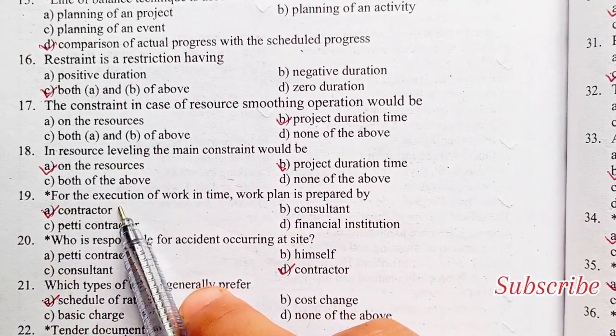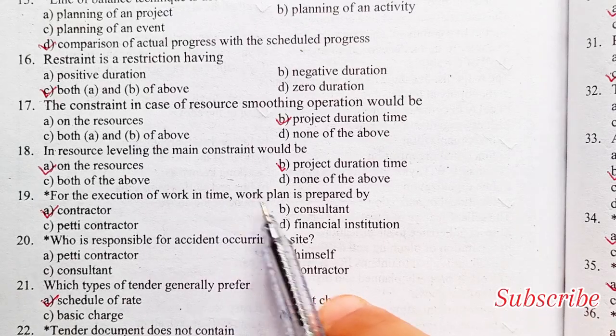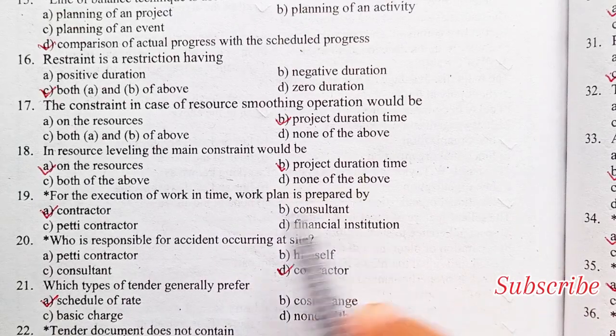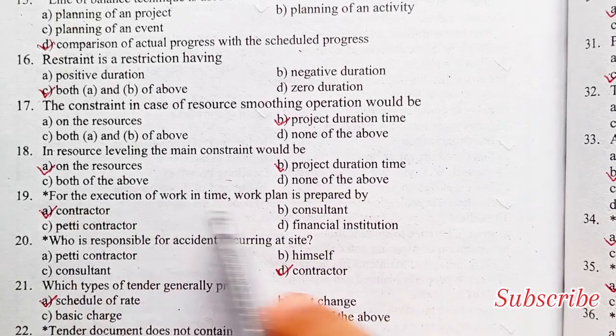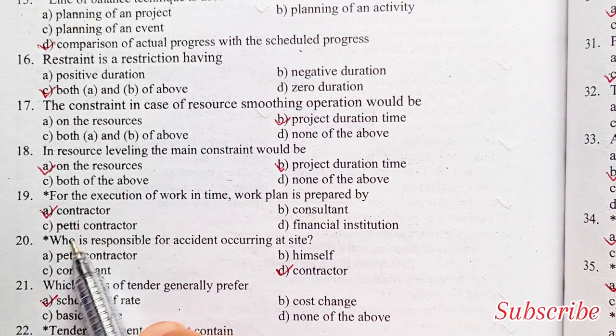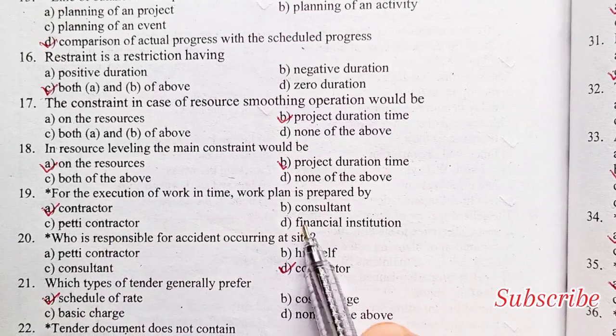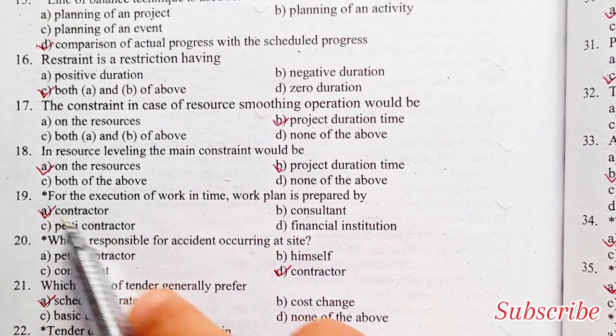For the execution of work in time, work planning is prepared by: a colleague, contractor, consultant, PT contractor, or financial institution. Option A is the right answer — contractor.